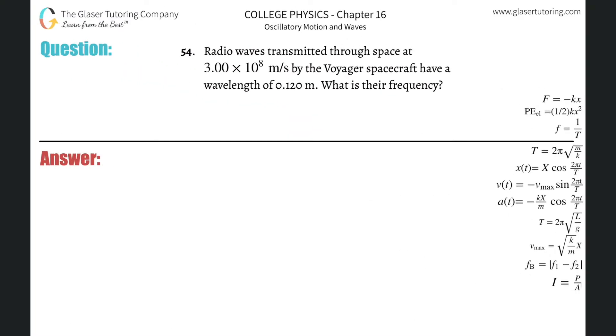Number 54. Radio waves transmitted through space at 3 times 10 to the 8 meters per second by the Voyager spacecraft have a wavelength of 0.12 meters. What is their frequency?